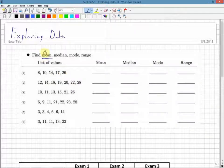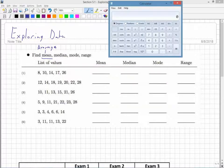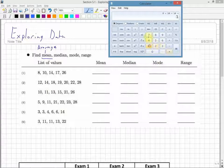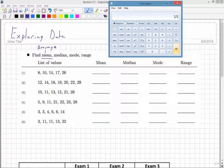The mean is the same as the average. The first thing I do is add up all the numbers: 8, 10, 14, 17, and 26. I add them all up and get 75. Then I count how many numbers there are - there's 1, 2, 3, 4, 5. I divide by the total number of numbers and get an answer of 15.